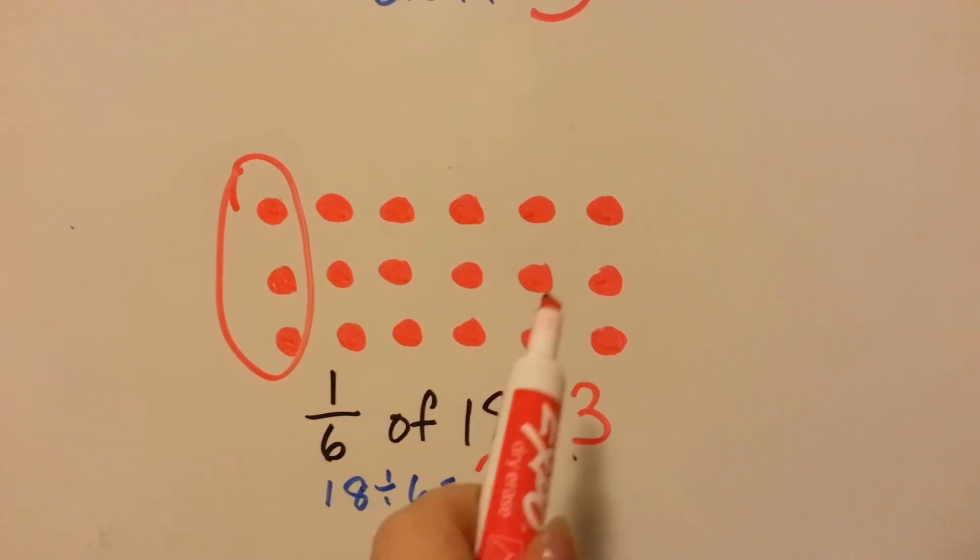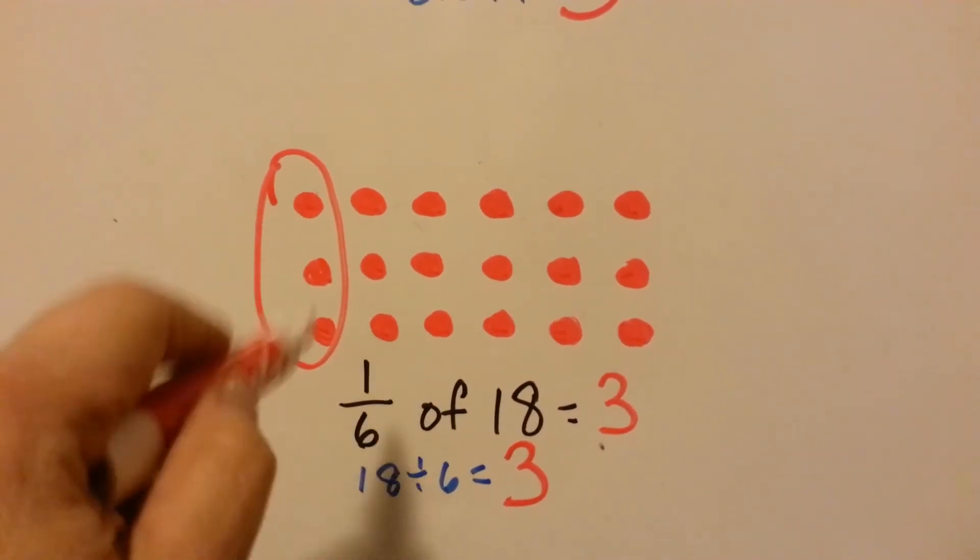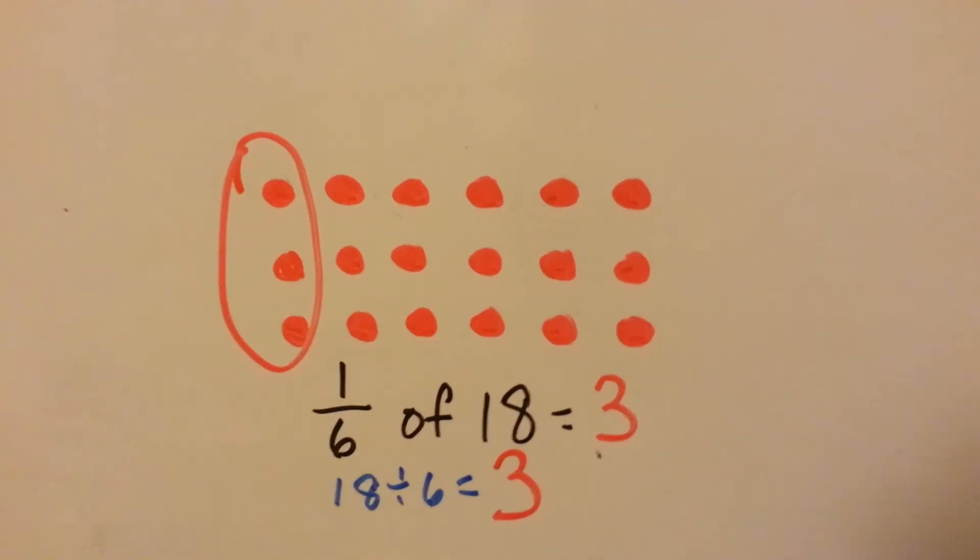1, 2, 3, 4, 5, 6. See? There would have been 6 groups, and 1 of the 6 groups would have 3 in it. See that?